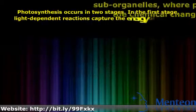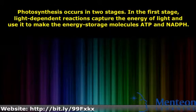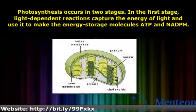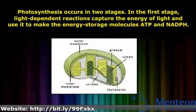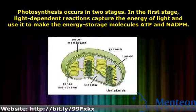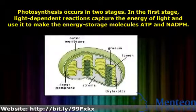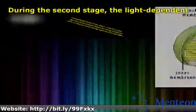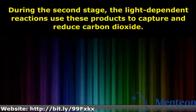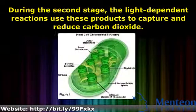Photosynthesis occurs in two stages. In the first stage, light-dependent reactions capture the energy of light and use it to make the energy storage molecules ATP and NADPH. During the second stage, the light-dependent reactions use these products to capture and reduce carbon dioxide.